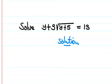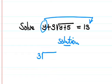We need to take this term to the other side, so 3 root y plus 5 equals 13 minus y.